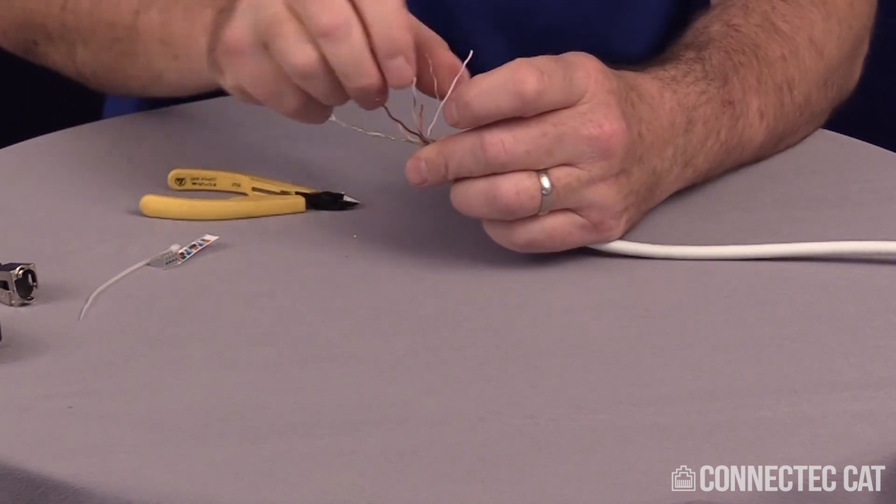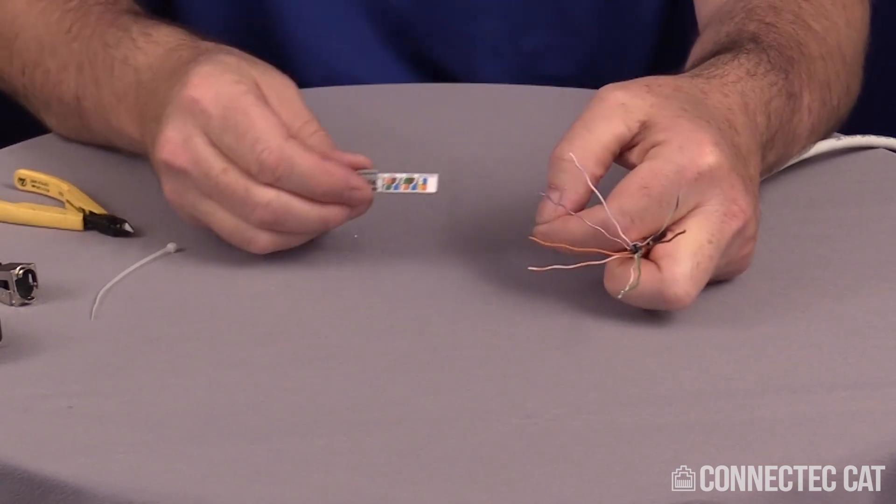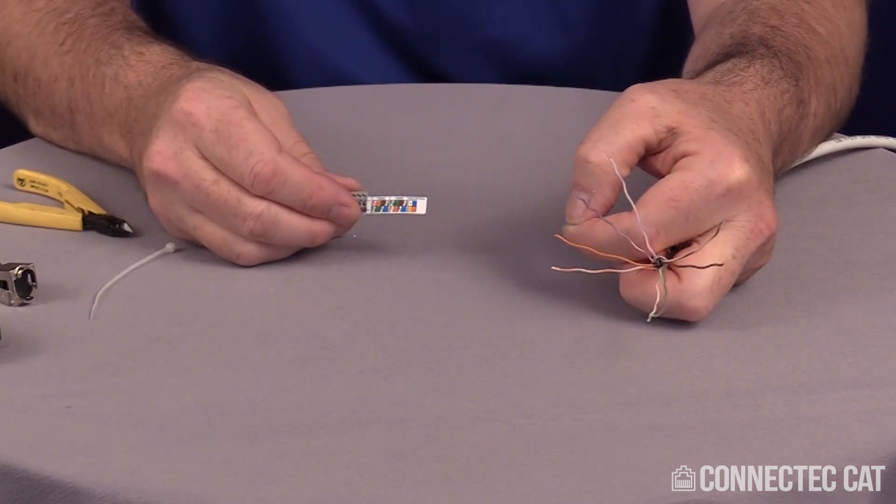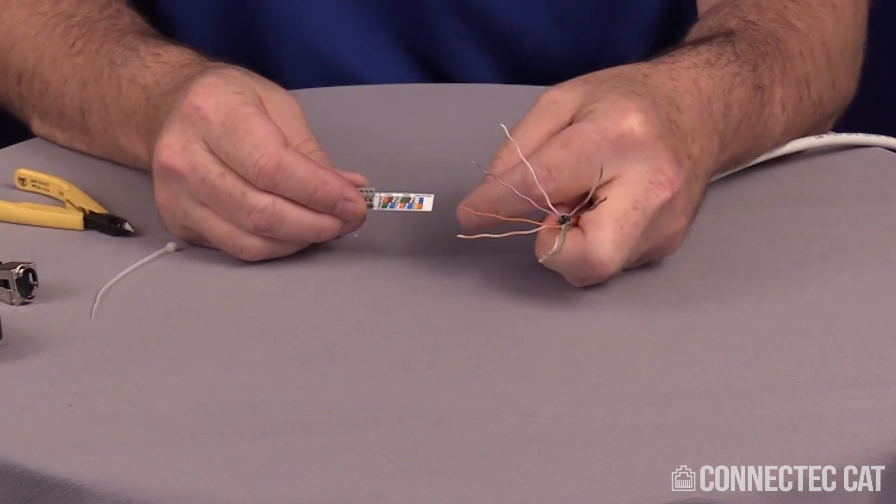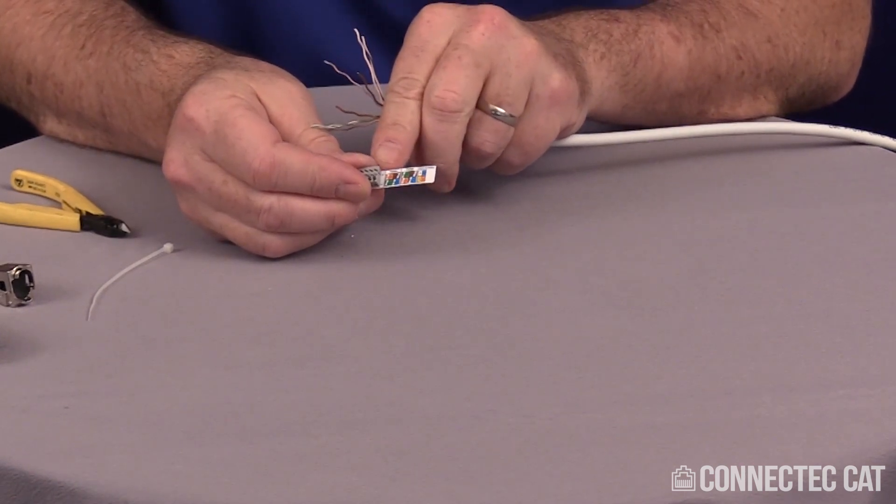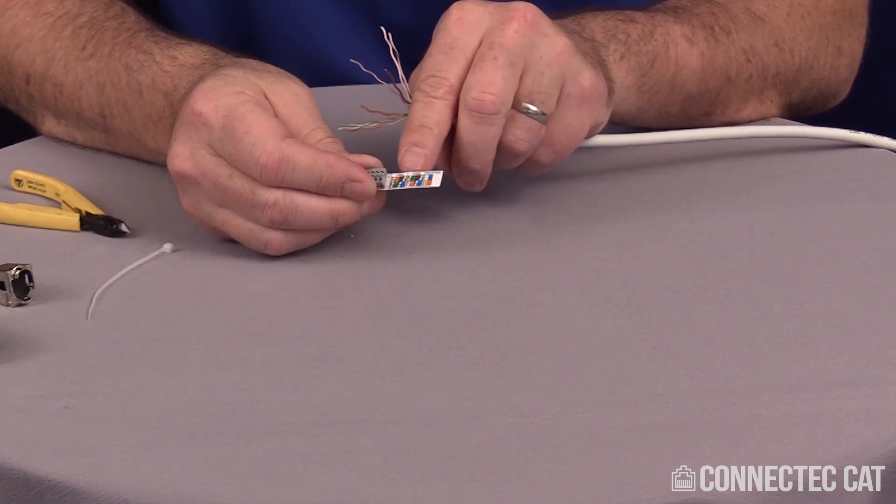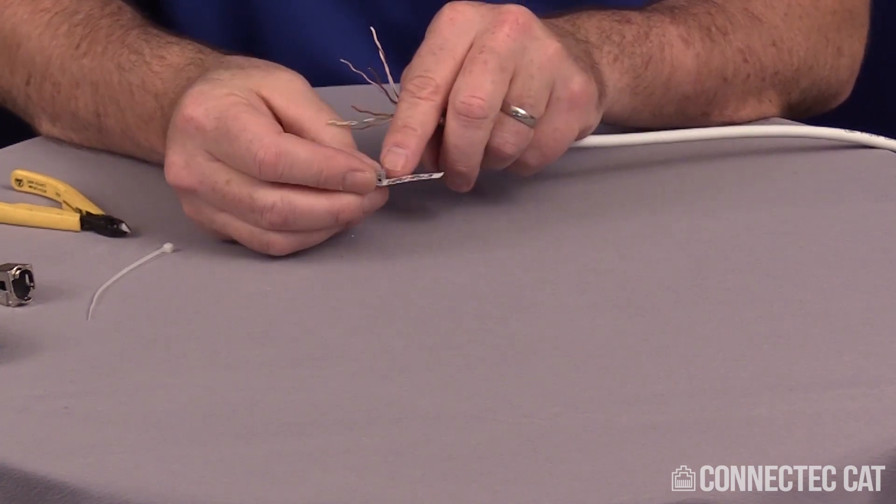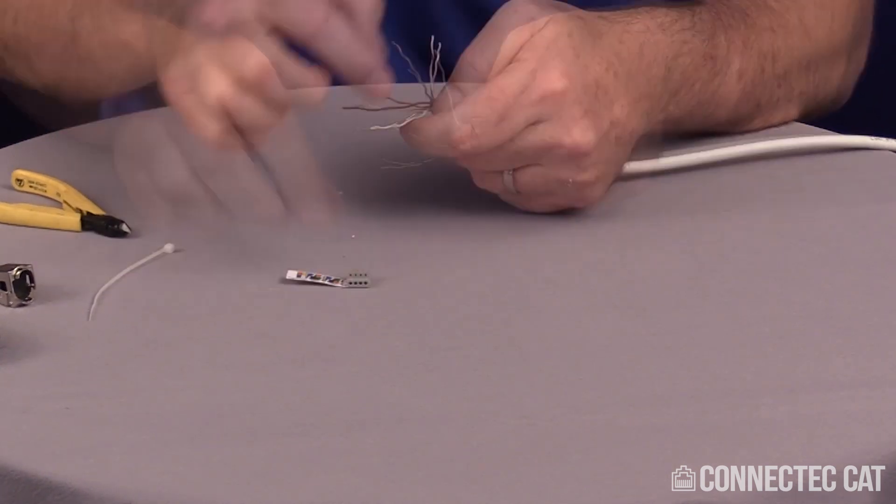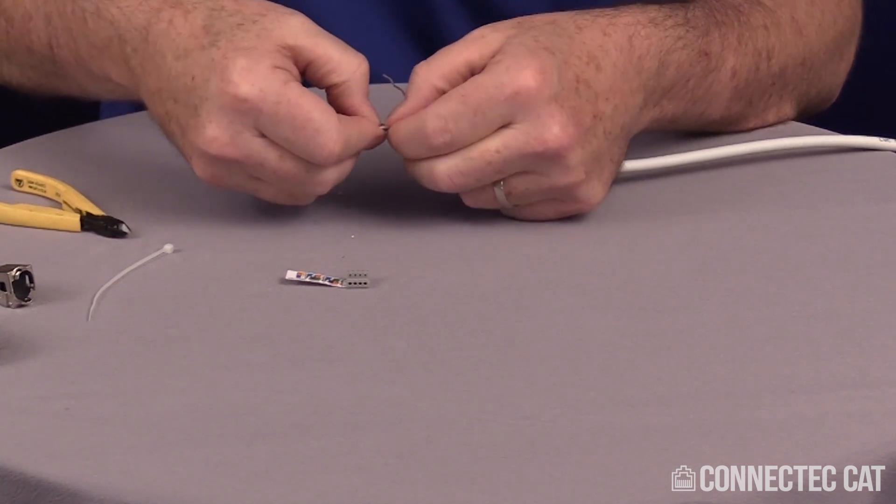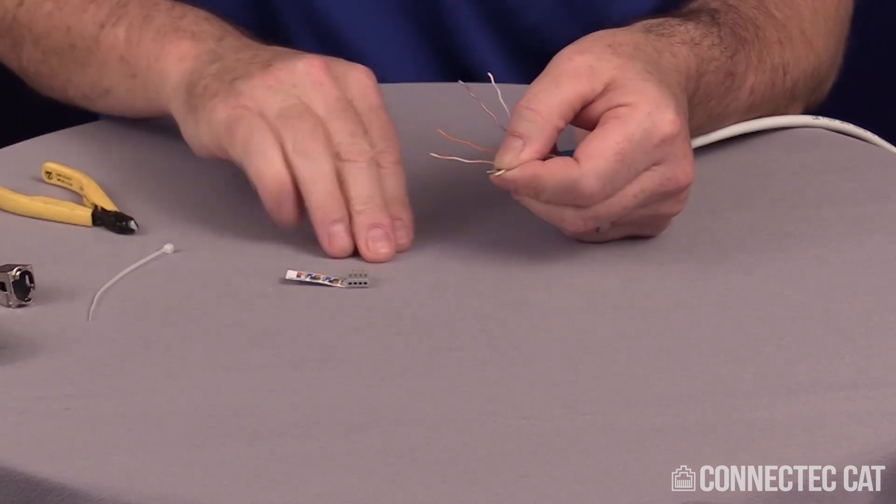Once I get these all lined up, I'll take my load bar. The load bar has three different color codes: 568A, 568B, and industrial. I'm doing a 568B. There are little arrows on the label showing which row the colors belong to. On 568B, the first one here, I'll have white orange, orange, white green, blue, white blue, green, white brown, brown on the bottom row that I load from the bottom section here. I'll set these up in the right color code. Once I get them set up, I'll align them together and trim off the excess to give me a flat surface to work from.